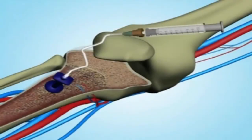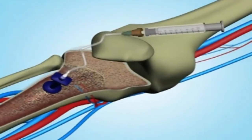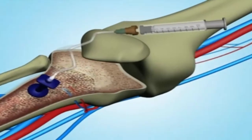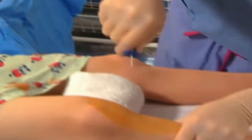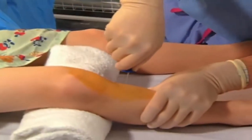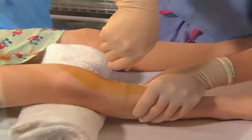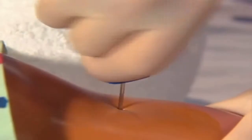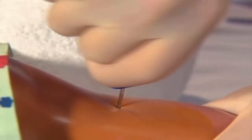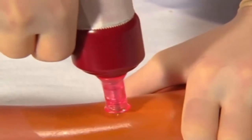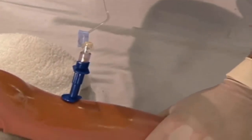Appropriate placement of an intraosseous catheter is a reliable means of obtaining urgent vascular access in children, with low rates of reported complications. Both manual and power-assisted placement techniques can be used to deliver fluids and medications rapidly during pediatric resuscitation.